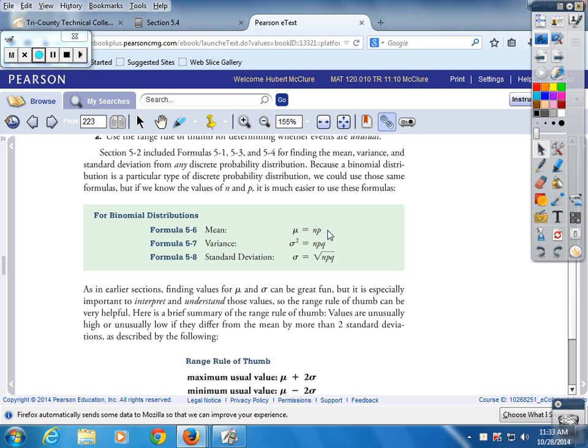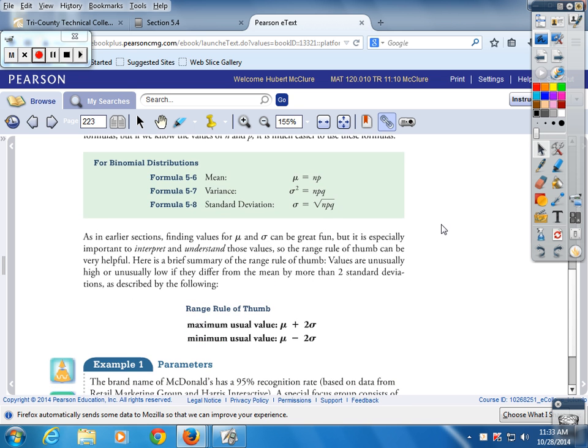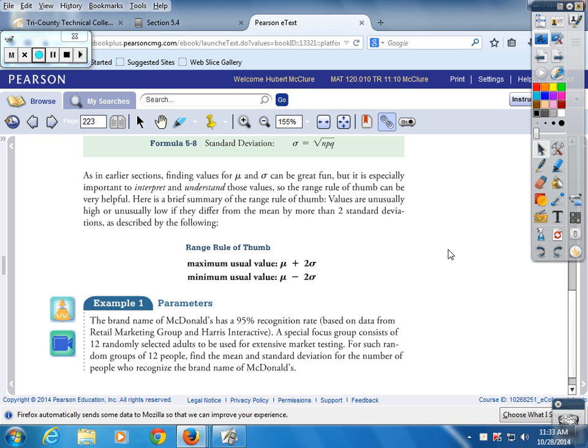And for 80% of you, you will find out that they're easy and they will be easy to get correct. There will be a couple of y'all that ask me how to do it. All right, let's take a look at this first example, and then we'll do some problems out of the homework online. It says, McDonald's has a 95% recognition rate based on marketing. A special focus group consists of 12 randomly selected adults to be used for extensive market testing.